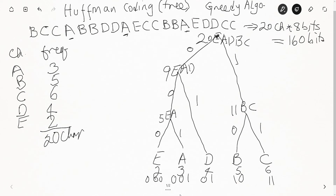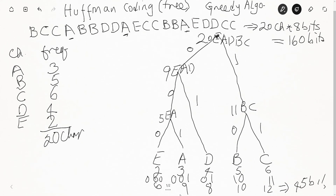The frequency of E is two with three bits each, giving six bits total. There are three A's, each three bits — nine bits total. Four D's at two bits each is eight bits. Five B's at two bits each is ten bits. Adding all these up gives a total of 45 bits.